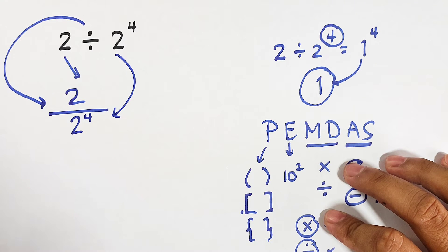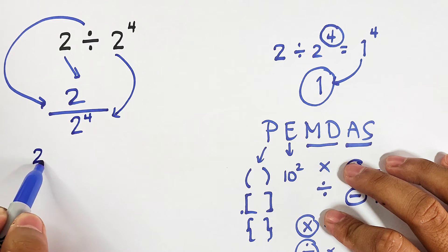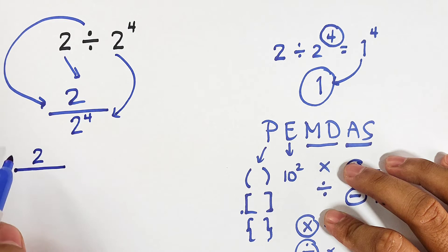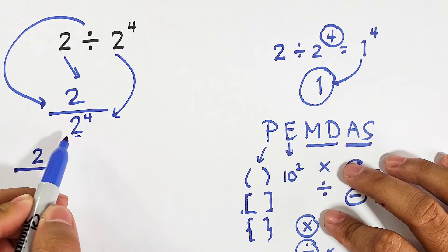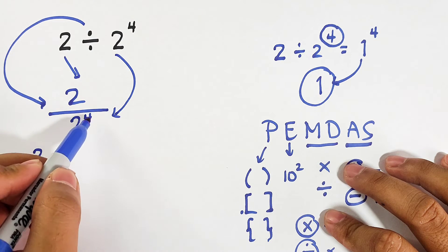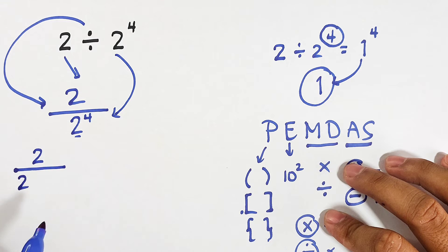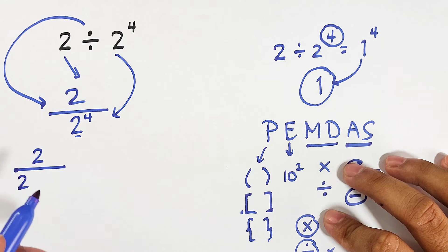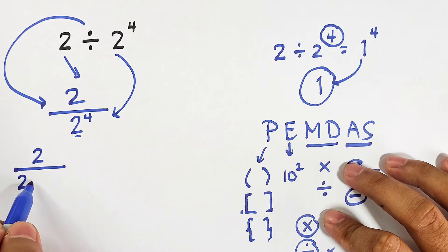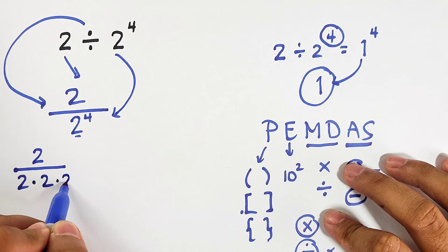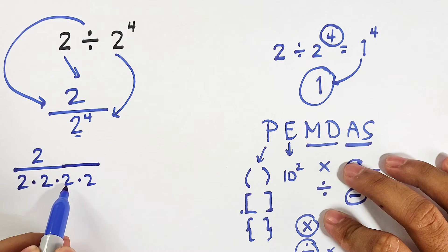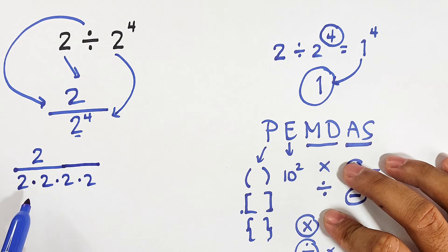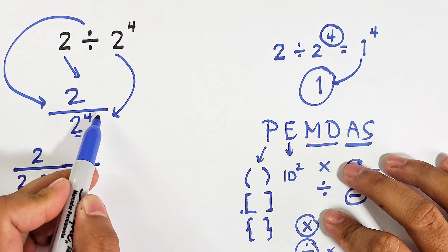So what we have is 2 over 2 raised to the 4th power. We copy the base of 2 and note the exponent is 4, meaning we express it as 2 times 2 times 2 times 2 — four factors of 2 — because that equals 2 raised to the 4th power.